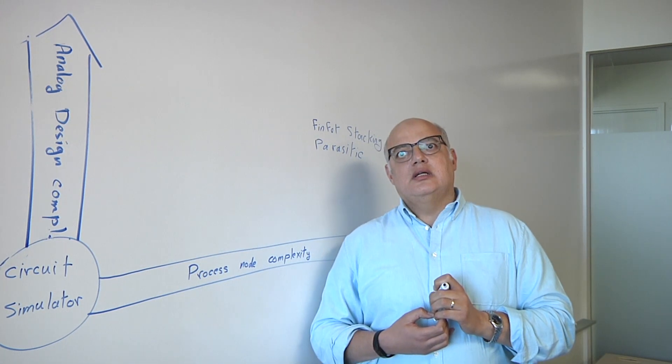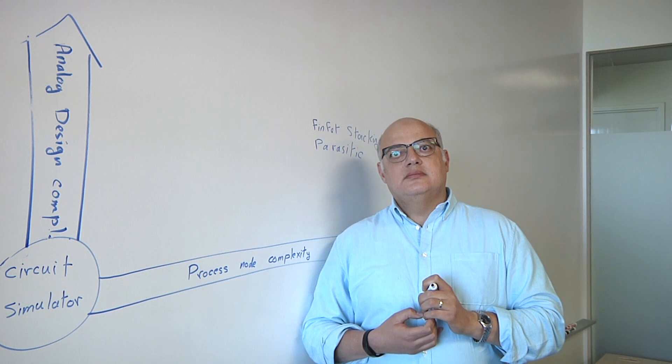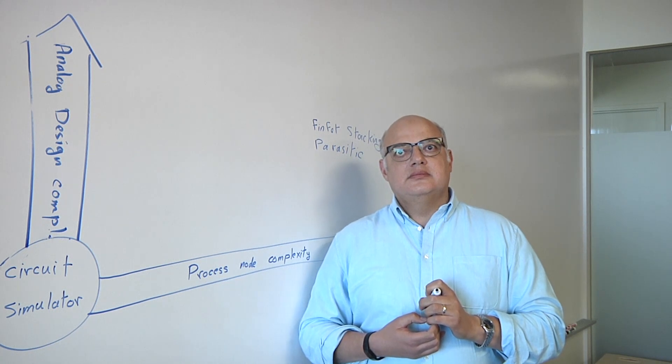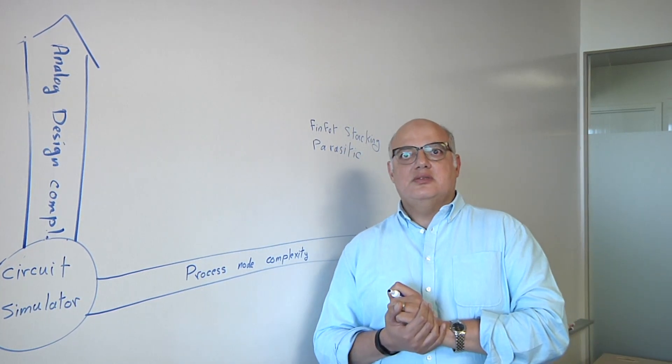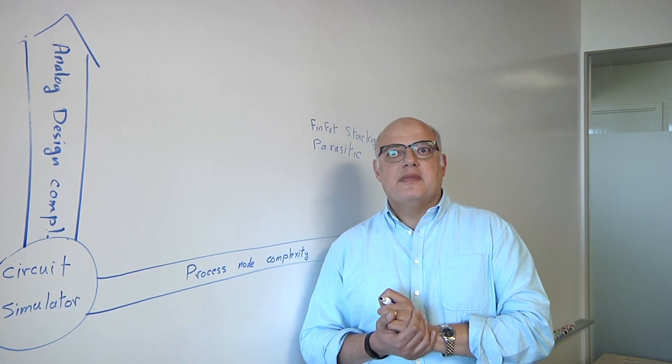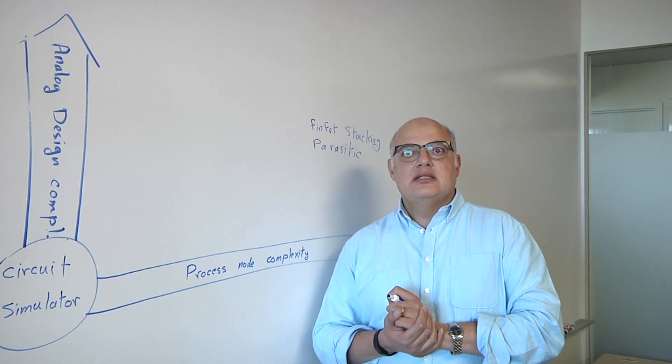It's hard enough to change a digital circuit. It's almost impossible to change an analog circuit after it's been designed, right? It's very hard, yes. Especially with all the constraints that are coming with advanced nodes. What happens as we get into gate all around? What does that do to the picture?